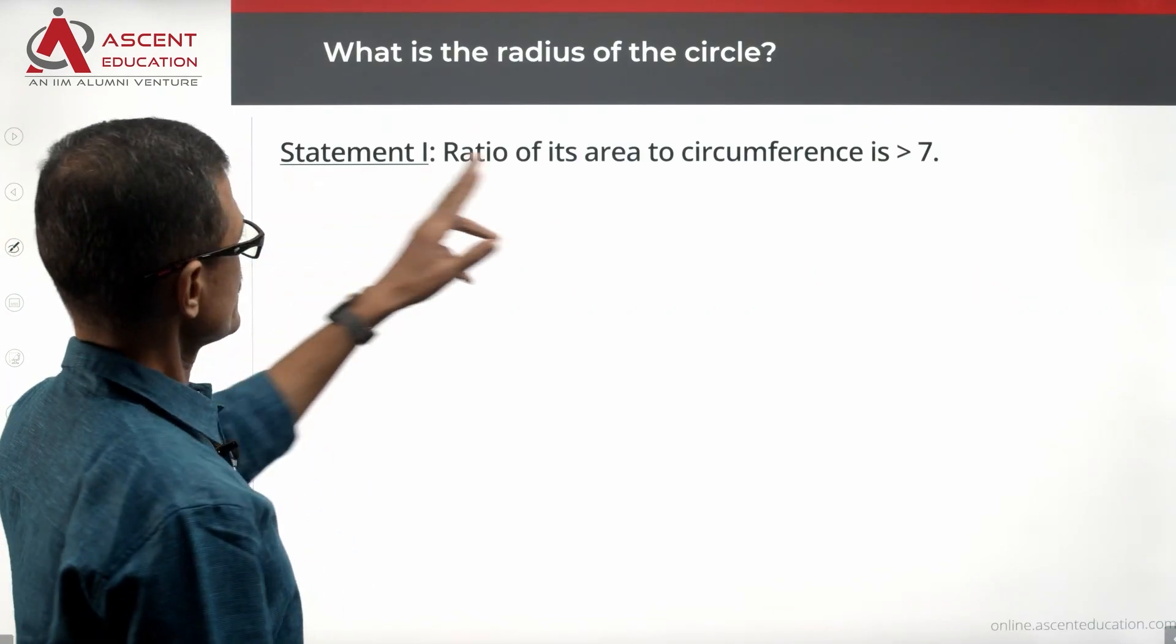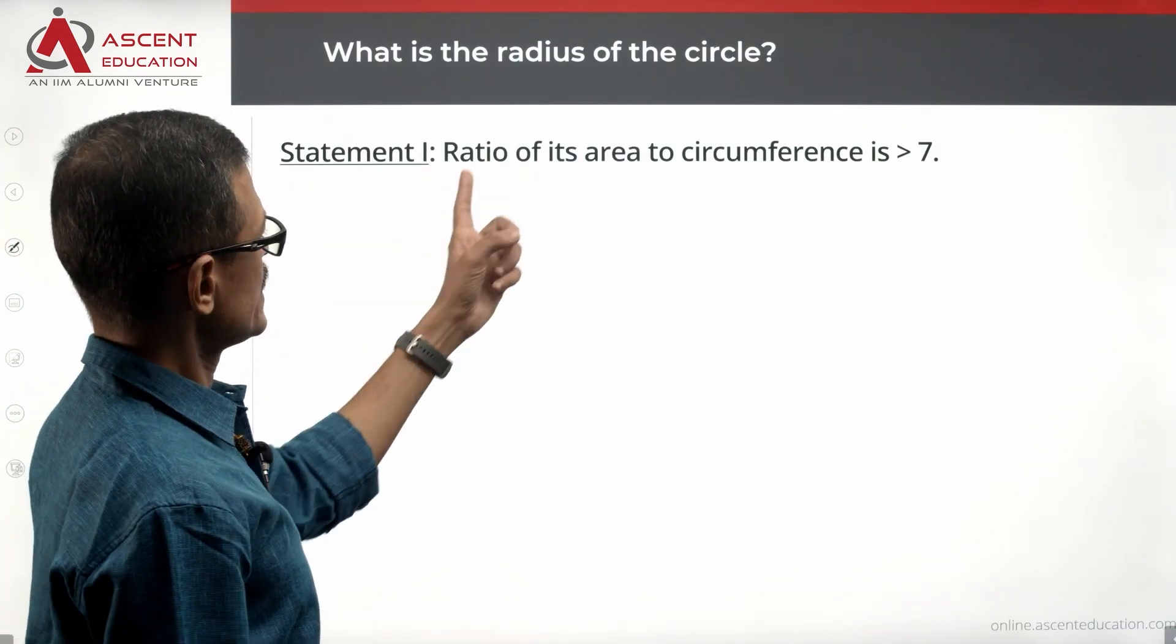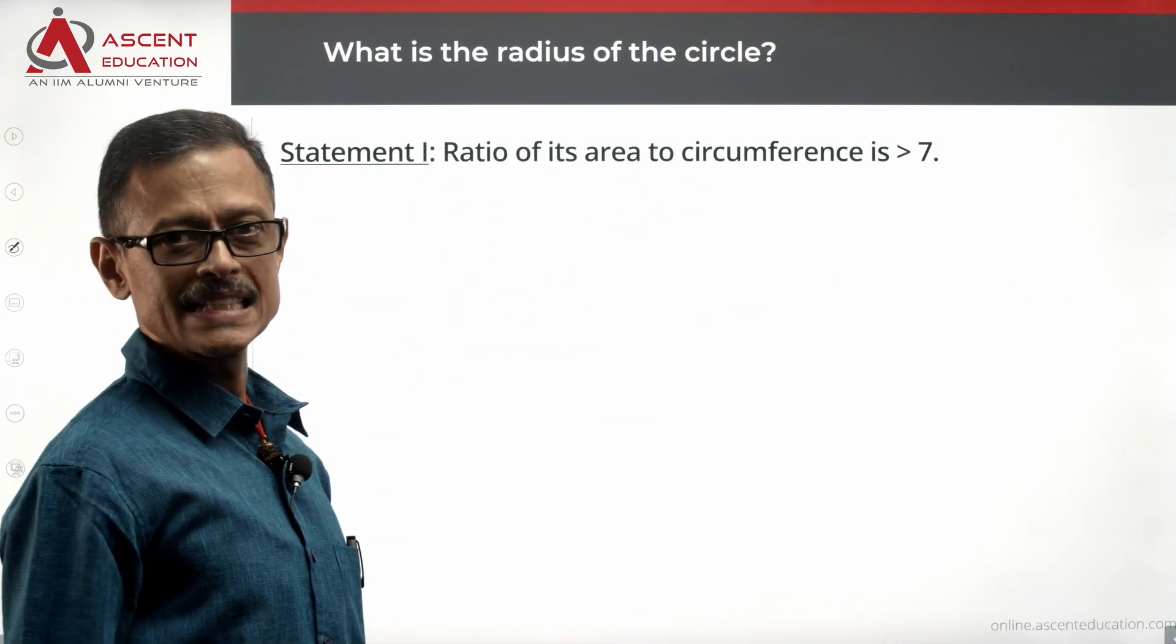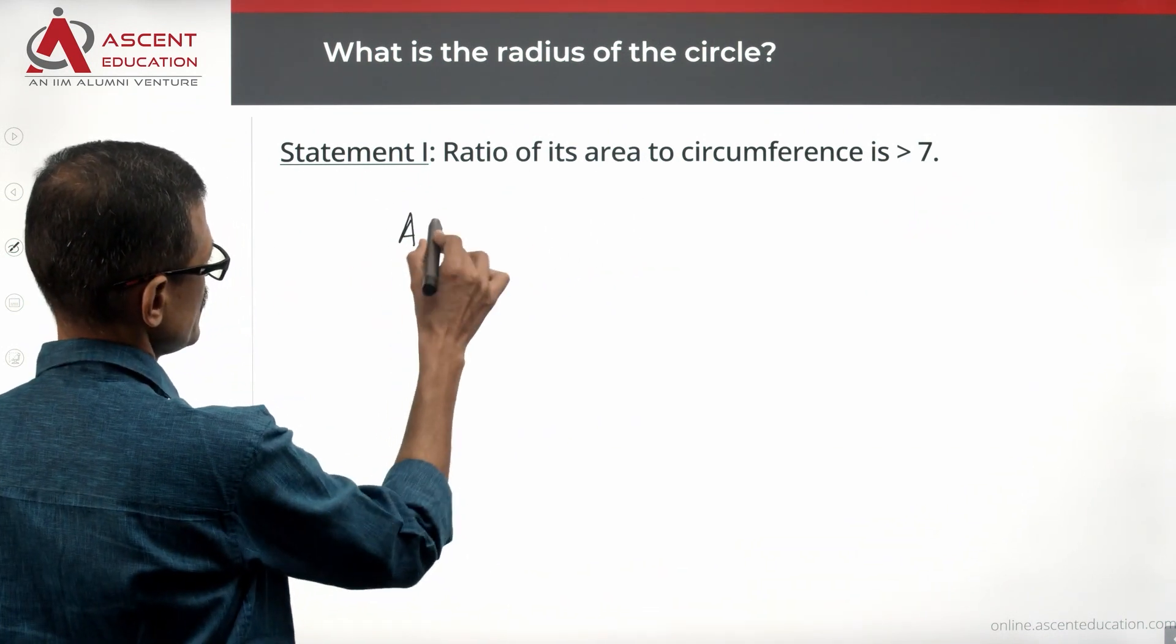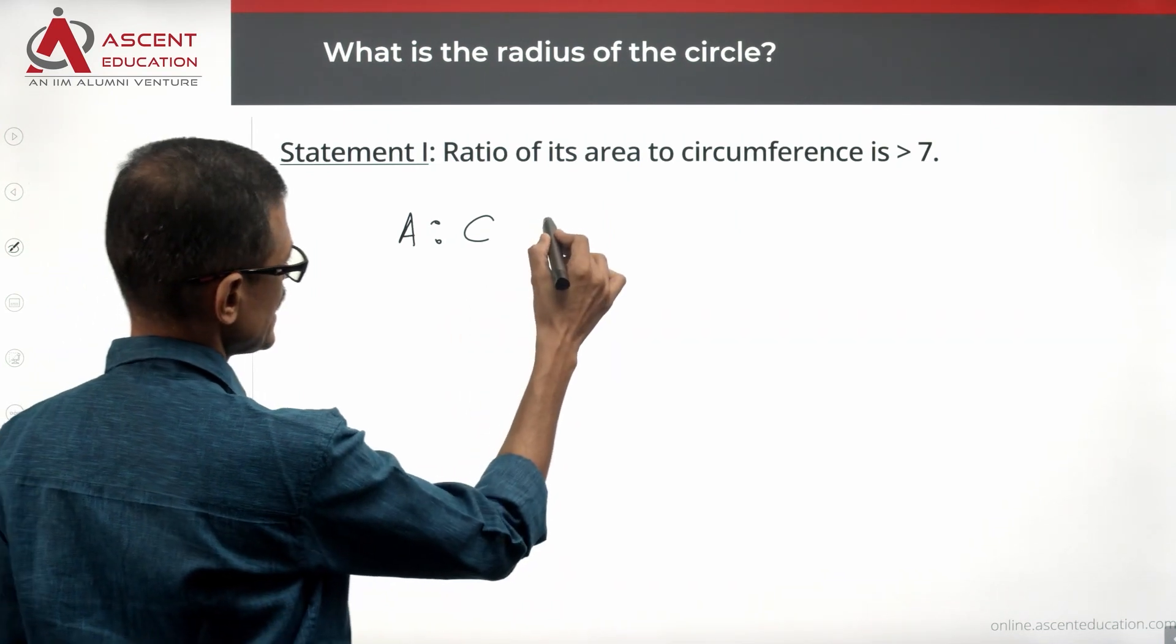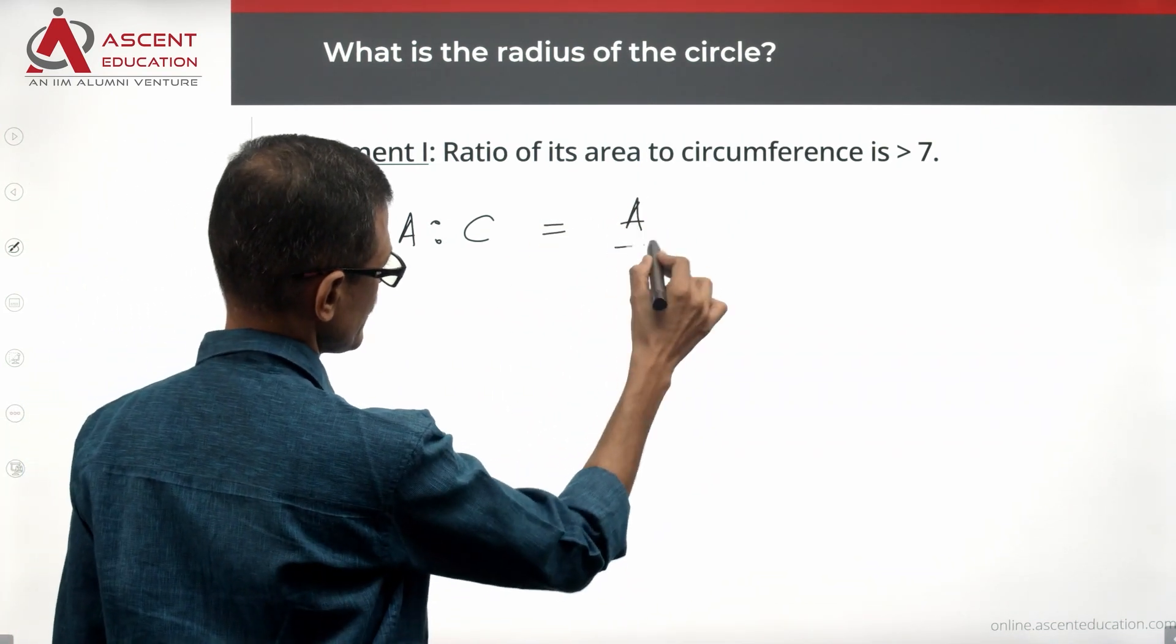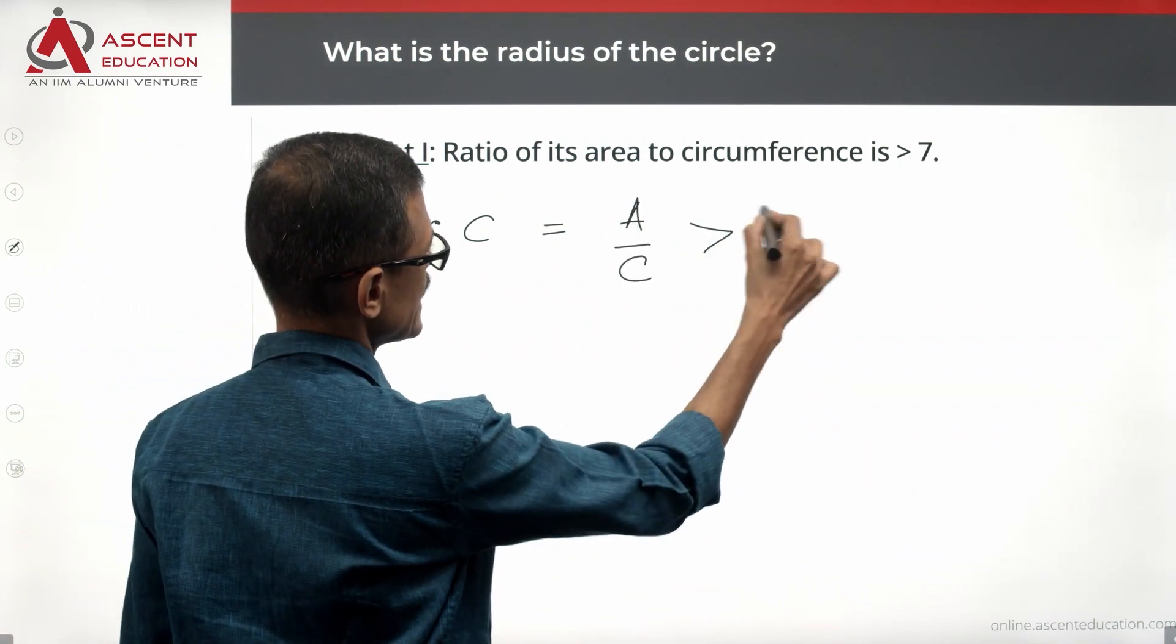Evaluate statement one alone. What does it say? Ratio of its area to circumference is greater than 7. Area is to circumference, we can write it as a fraction. A by C is greater than 7.